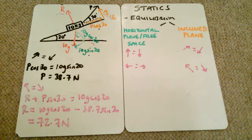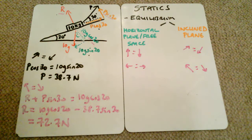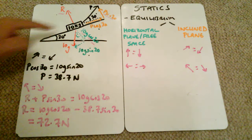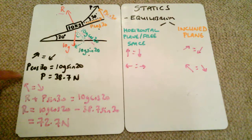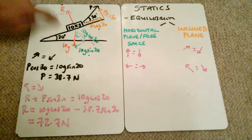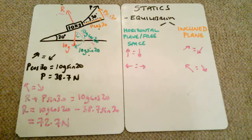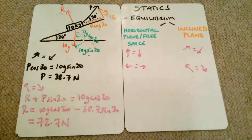That's our final answer. We resolved forces parallel and perpendicular to the inclined plane, and because this is a static equilibrium particle, we said forces parallel up the slope equal forces parallel down the slope, and forces perpendicular out of the slope equal forces perpendicular into the slope. I hope that's made sense — if not, please leave a comment below or message me directly. Thank you for watching, take care and goodbye.